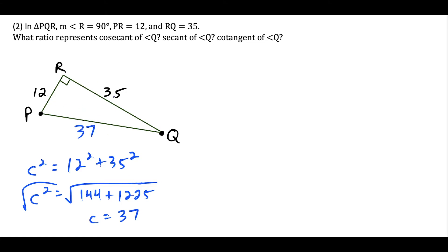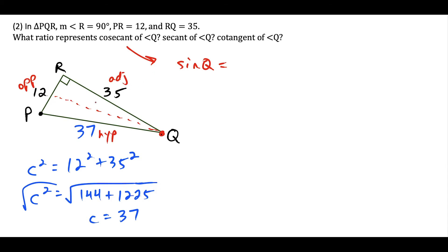Now that we have all three sides, we can find the ratios. Cosecant of angle Q is related to sine of angle Q — cosecant is the reciprocal of sine. Starting at Q, side PR is opposite, RQ (35 units) is adjacent, and 37, the longest side across from the right angle, is the hypotenuse. Sine of angle Q is opposite over hypotenuse: 12 over 37. So cosecant of angle Q is the reciprocal: 37 over 12.